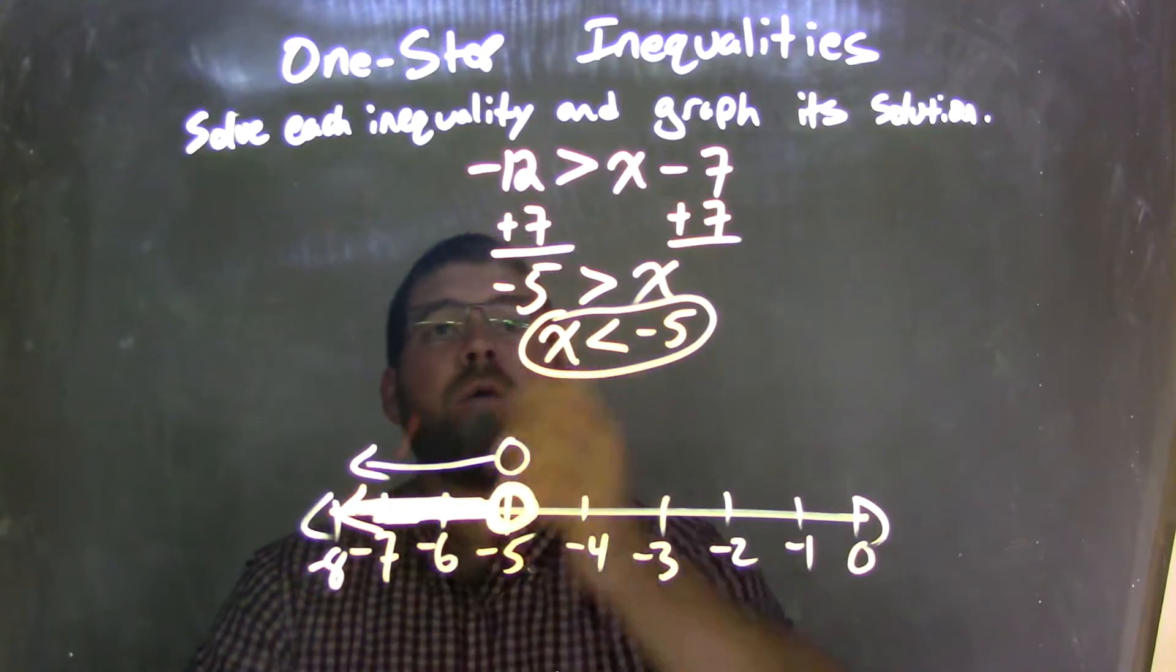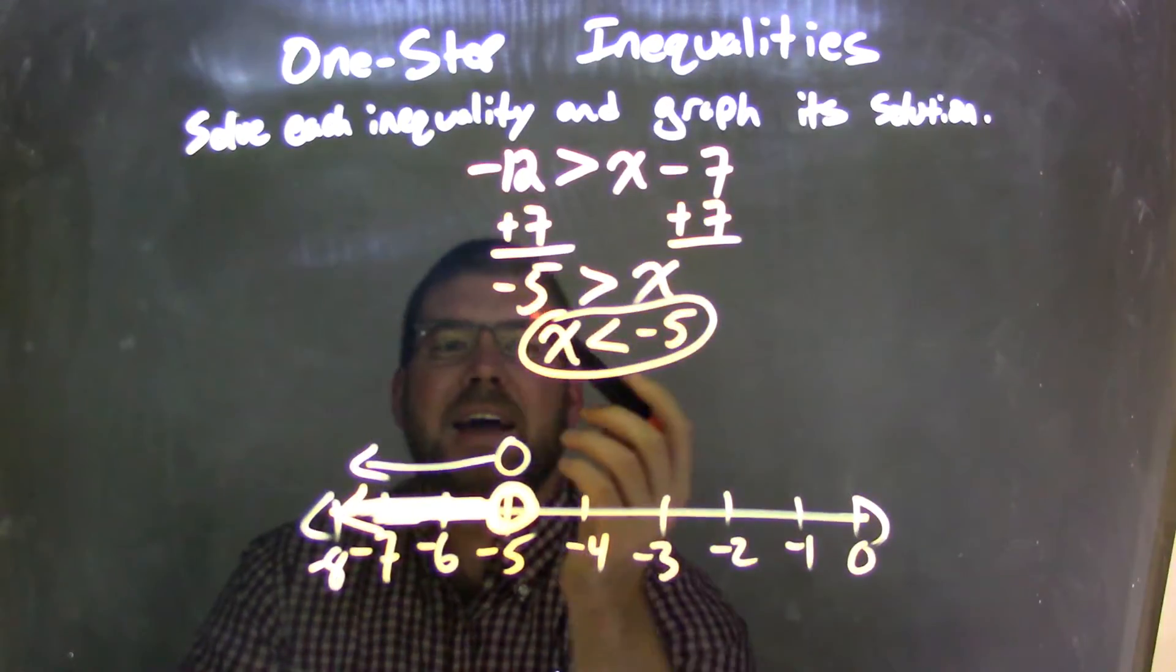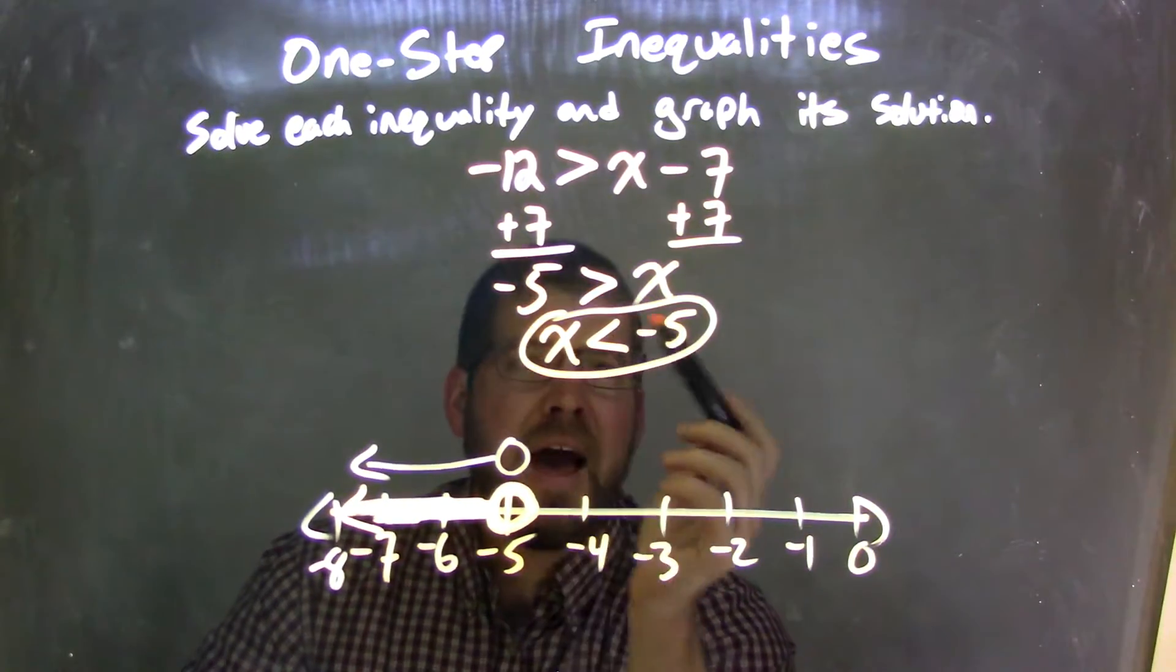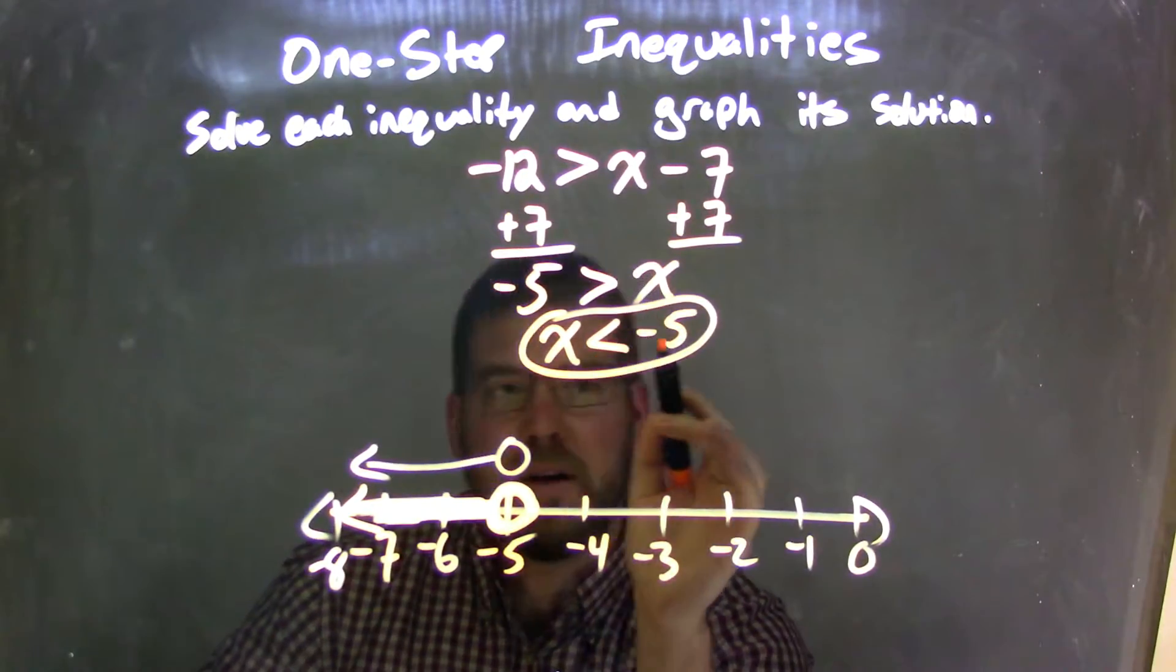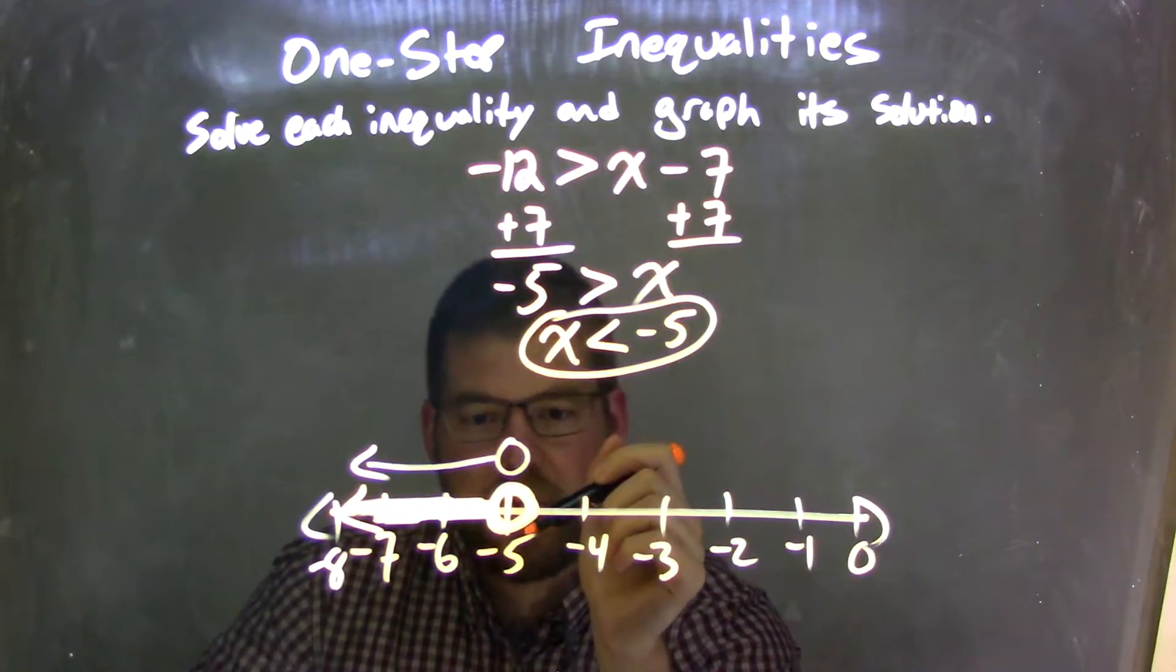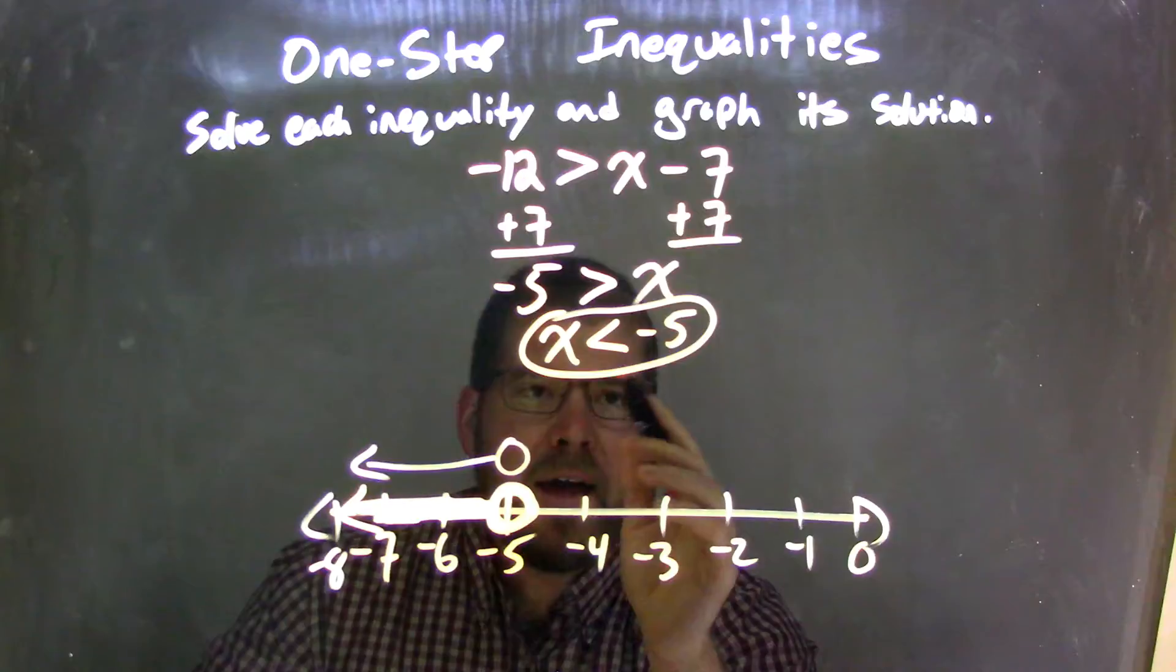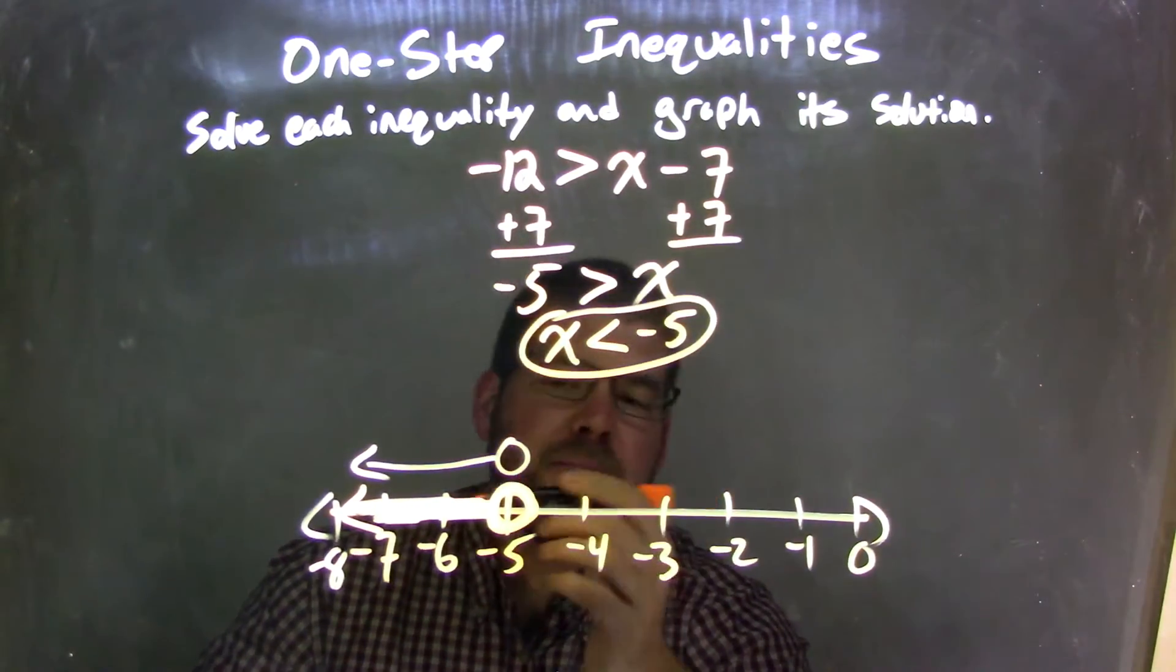So, let's recap. We started with negative 12 is greater than x minus 7, brought the 7 over, had negative 5 is greater than x, and then rewrote that. I had x come first, so I made it x is less than, flip the inequality, negative 5. So when I graphed that, I started at negative 5, put an open circle at negative 5, and then my arrow went to the left, because it's less than that value.